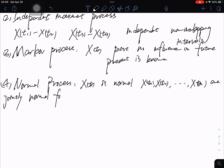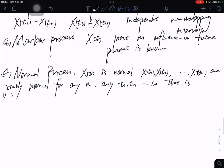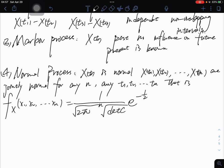For any t1, t2, ..., tn, the joint PDF f(x1, x2, ..., xn) equals (2π)^(-n/2) |C|^(-1/2) e^(-1/2(x-μ)^T C^(-1)(x-μ)).